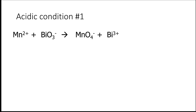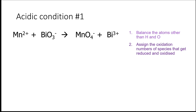The first step is to balance the atoms that are not hydrogen and oxygen. In this case, manganese and bismuth are both balanced already. The second step is to assign the oxidation states of the species that undergo oxidation and reduction. Since oxygen doesn't undergo changes, I'm not writing its oxidation state. Manganese is oxidized from +2 to +7, whereas bismuth gets reduced from +5 to +3.